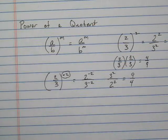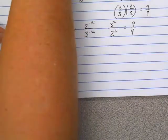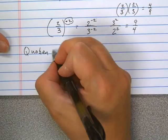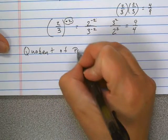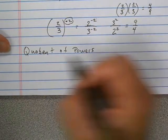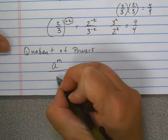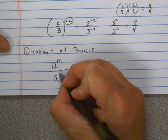So let's talk about then the quotient of powers. Quotient of powers. It looks like this. So you have something to a power over that same something to a different power.